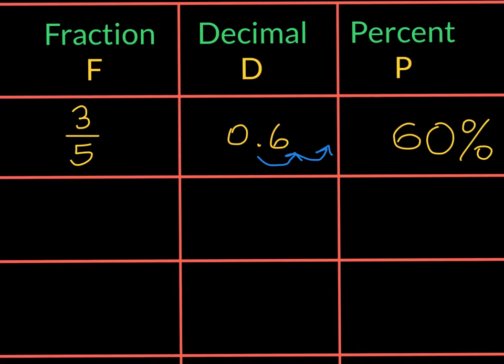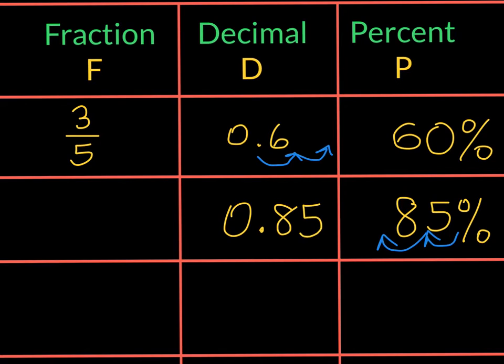Let's start with a percent this time. Let's take 85%. And let's think. If to change from decimal to percent we multiplied by 100, to change percent to decimal we're going to have to divide by 100. So we're going to move its decimal place two times to the left, and we're going to get 0.85. Now, if we think about it, this is 85 hundredths. And now, if we take this fraction and divide the numerator and the denominator by 5, we will reduce it to 17 twentieths.